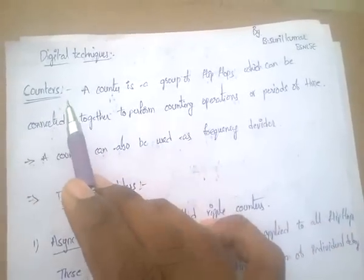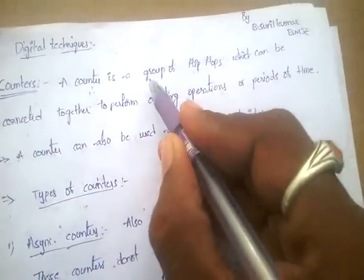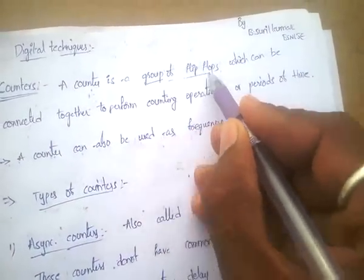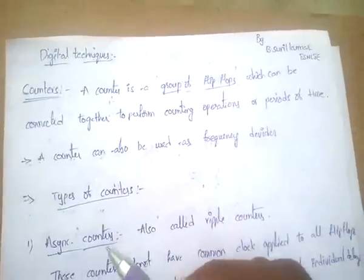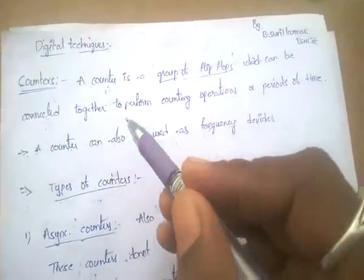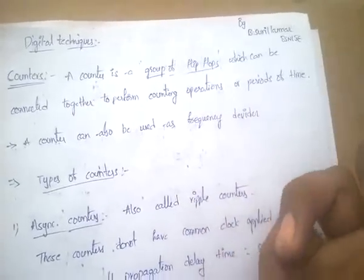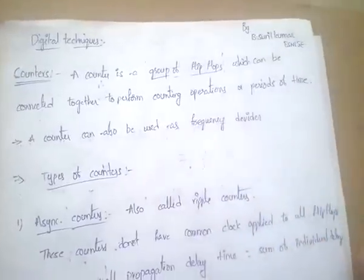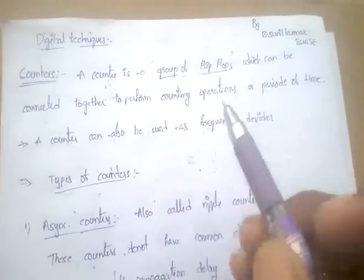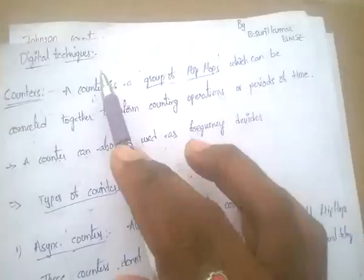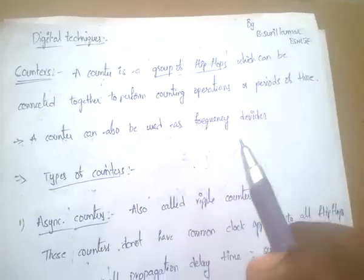A counter is a group of flip-flops — very important. A counter is a group of flip-flops which can be connected together to perform counting operations or measure periods of time. A counter can also be used as a frequency divider, dividing the frequency for every counting operation.